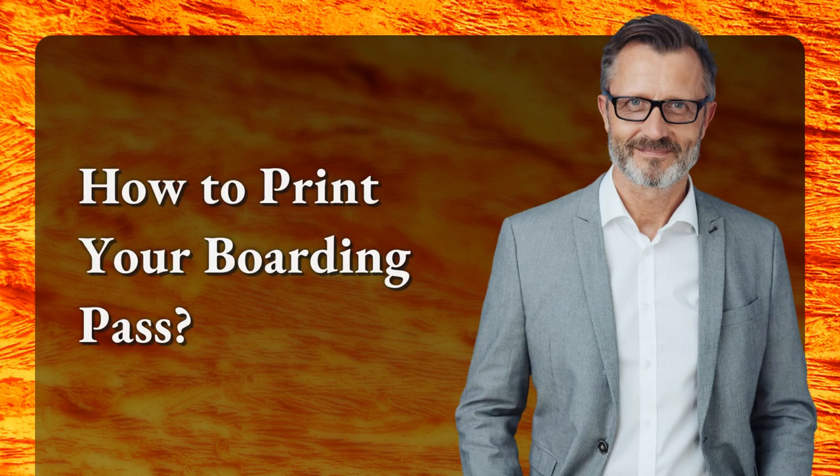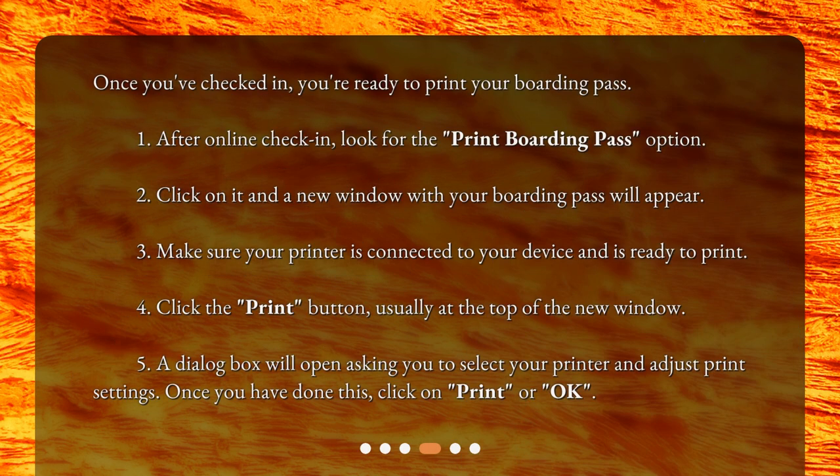How to print your boarding pass? Once you've checked in, you're ready to print your boarding pass. 1. After online check-in, look for the print boarding pass option. 2. Click on it and a new window with your boarding pass will appear. 3. Make sure your printer is connected to your device and is ready to print. 4. Click the print button, usually at the top of the new window. 5. A dialog box will open asking you to select your printer and adjust print settings. Once you have done this, click on print or OK.